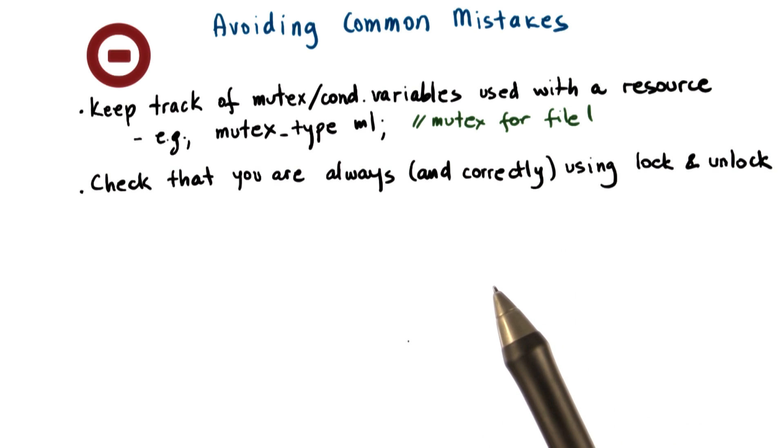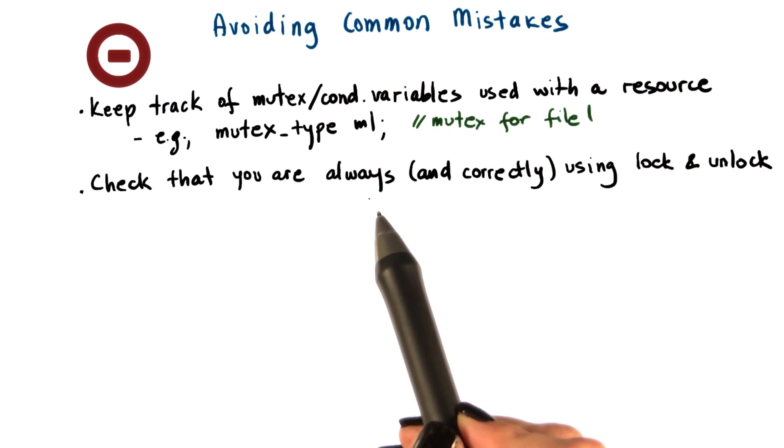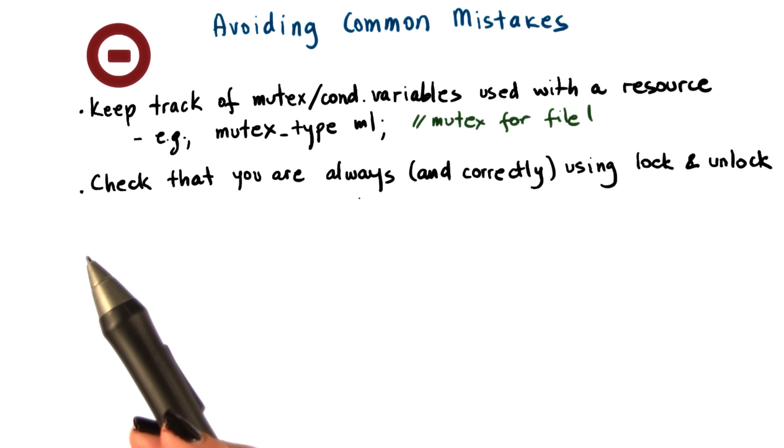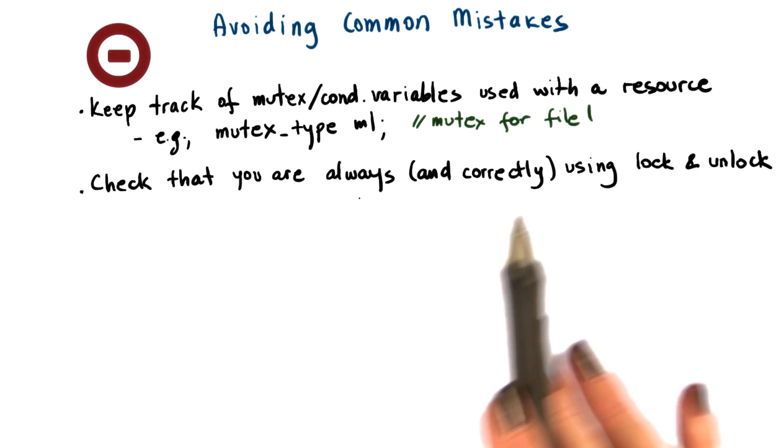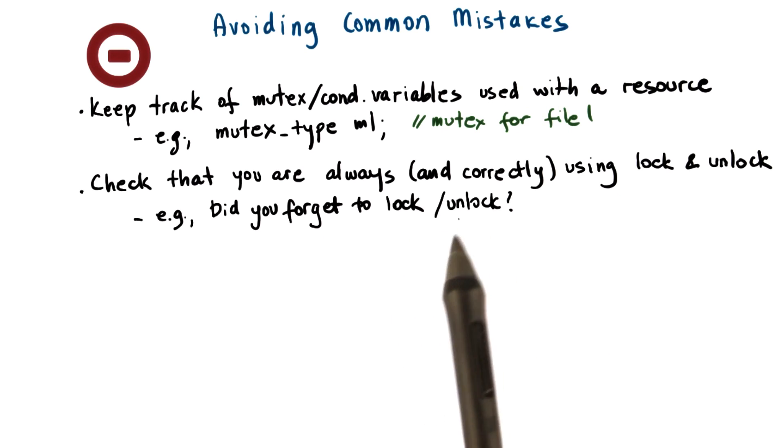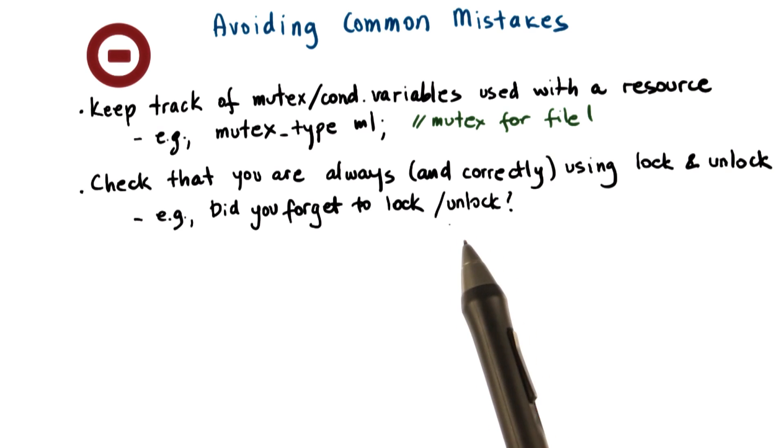Next, make sure that if a variable or a piece of code is protected with a mutex in one portion of your code, that you're always consistently protecting that same variable or that same type of operation with the same mutex everywhere else in your code. Basically, a common mistake is that sometimes we simply forget to use the lock unlock constructs, and therefore sometimes access a variable in a safe way. And if we don't use the lock and unlock, then it won't be accessed in a safe way.